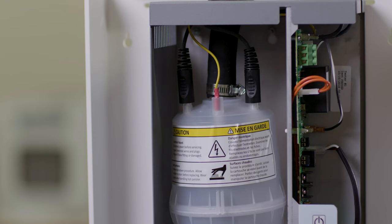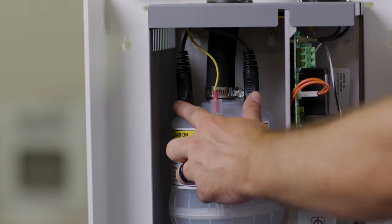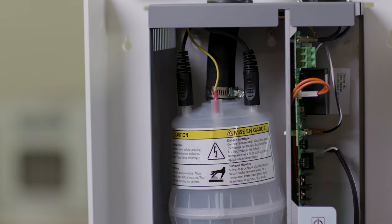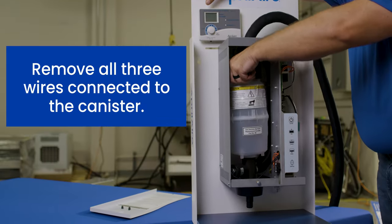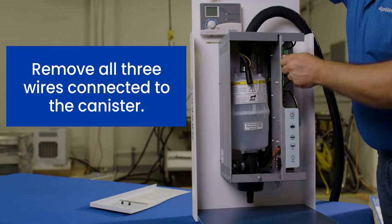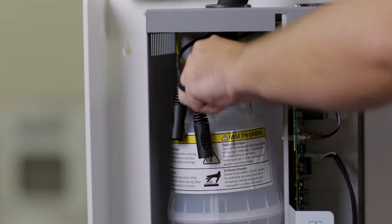On top of the canister, there are two electrode wires with black connectors and a yellow high water pin with a red connector. Pull those off. There's no polarity, so the electrode wires can be reattached to either of the corresponding pins.